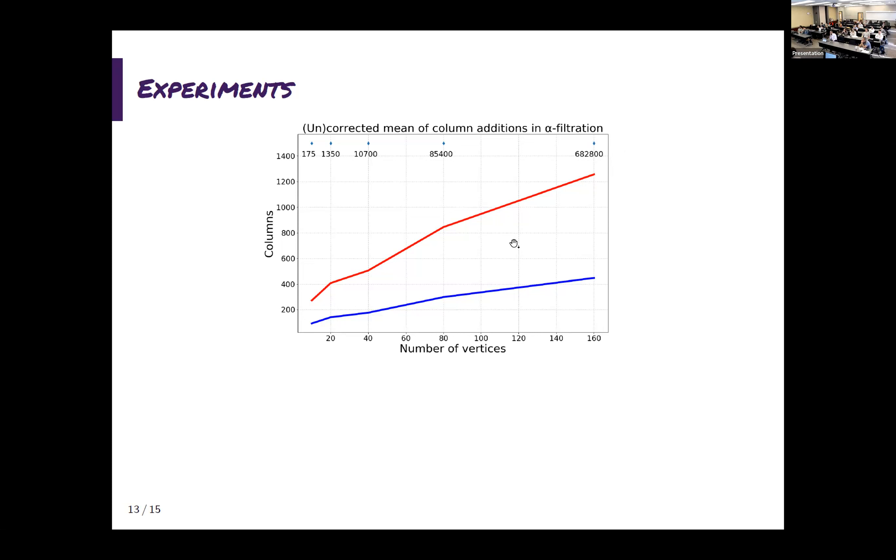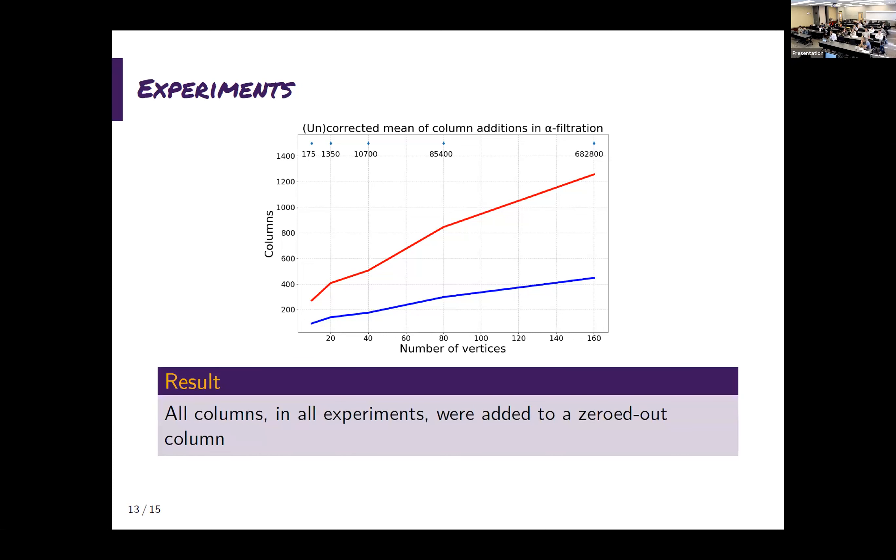But the point is, there is only a small fraction of columns over which I will need to run again the reduction. So removing a simplex without recomputing from scratch seems to be experimentally the best way. And then I have another interesting result. All the columns, all the experiments were added to a zeroed-out column. So for all the long list of inputs that you saw before, we can always use the optimization.